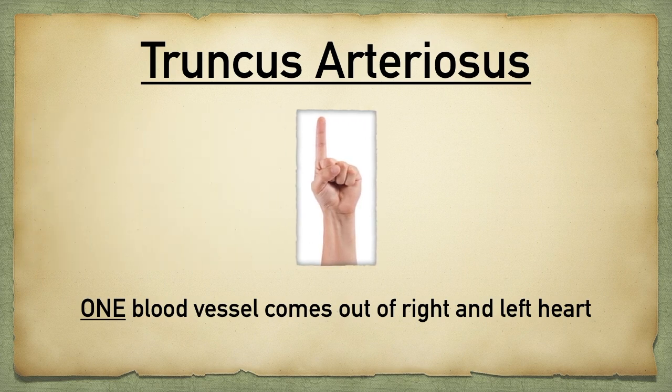Number one: truncus arteriosus. This is when one blood vessel comes out of the right and left heart.